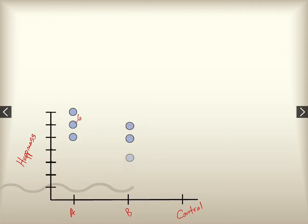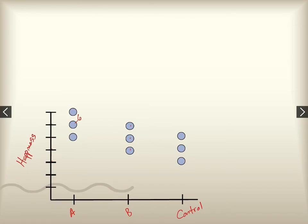In group B we have three people — someone who scored a four, a five, and a six on happiness. In the control group we have someone who scored a four, a five, and a three on happiness. Our basic experiment has three groups. We can think of these as nine different observations, or each group can be represented by a mean.